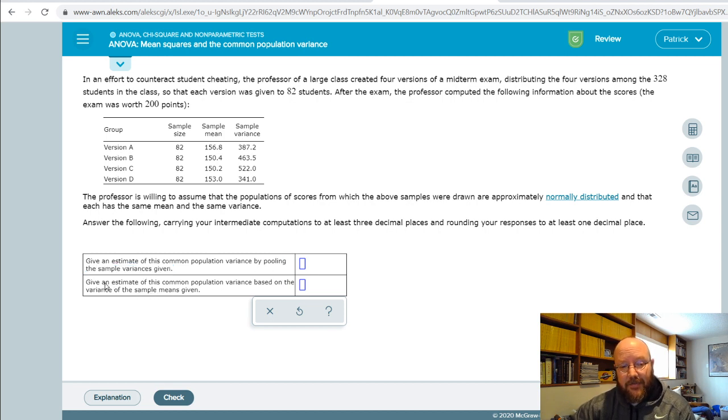The second one is: give an estimate of common population variance based upon the variance of the sample means given. That's asking you to calculate something called MST, which is mean square of treatments. So pooling sample variances is mean square error (MSE), and based upon the variance of the sample means given is MST.